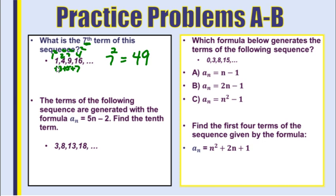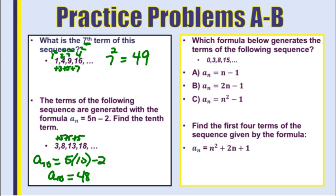The terms of the sequence 3, 8, 13, 18 are generated by the formula a subscript n equals 5n minus 2. Find the 10th term. So 5 times 10 minus 2 gives the 10th term as 48. You'll also notice the sequence just adds 5 each time, so you could continue that pattern, but the formula is much quicker — it takes away how long it takes to solve the problem.